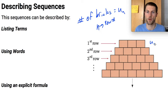So then the first row we could call u sub 1, the number of bricks at row 1. The second row we could call u sub 2, the number of bricks at row 2. The number of bricks at row 3 would be u sub 3 and so on and so forth.